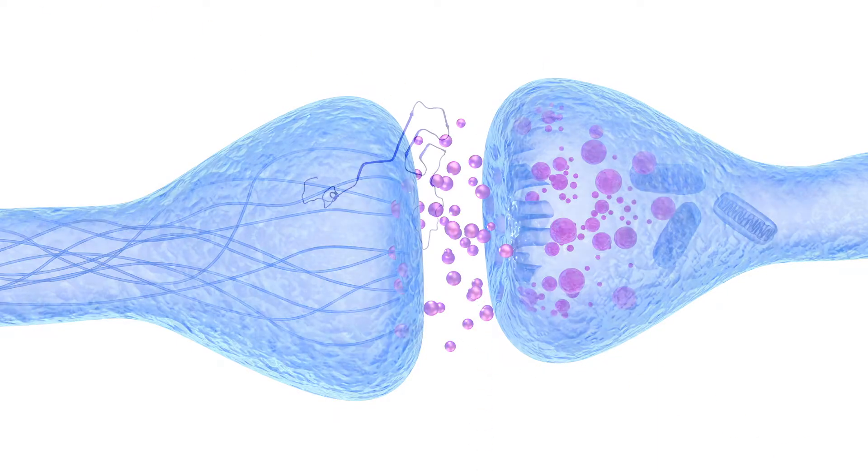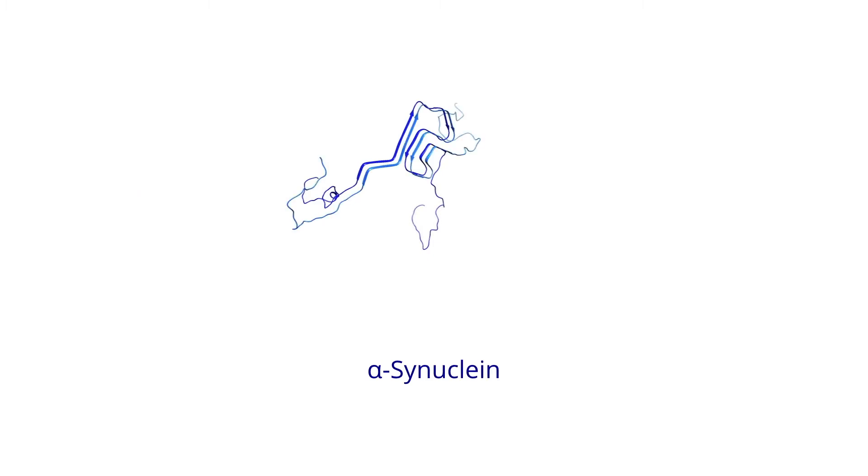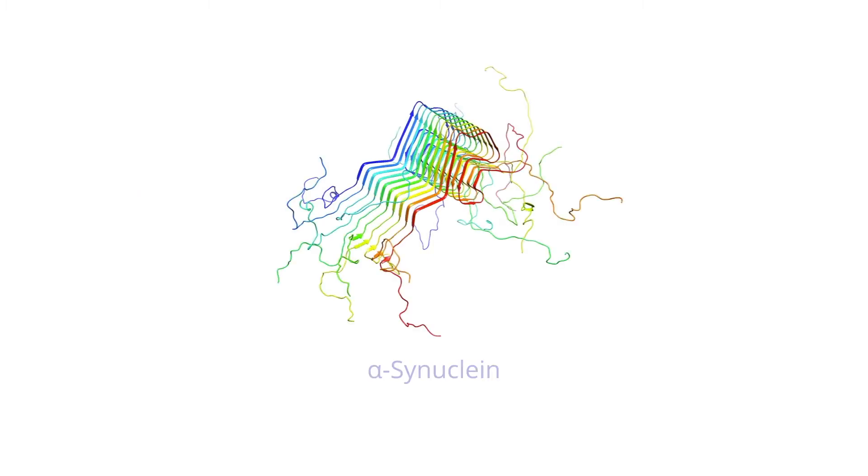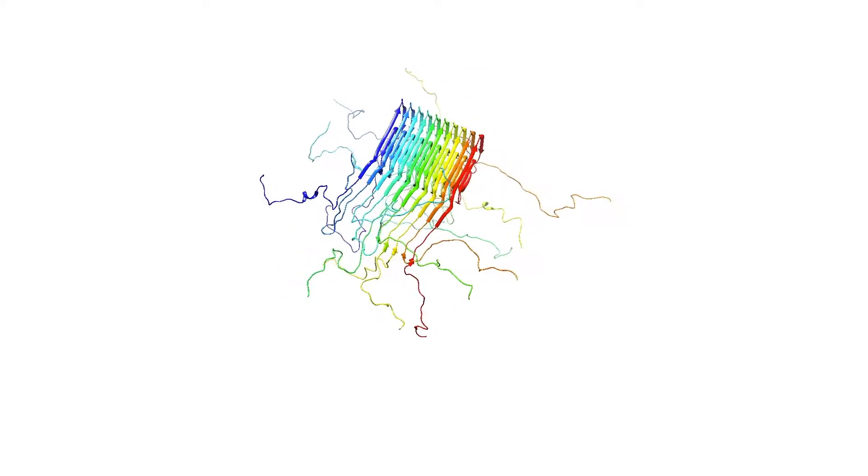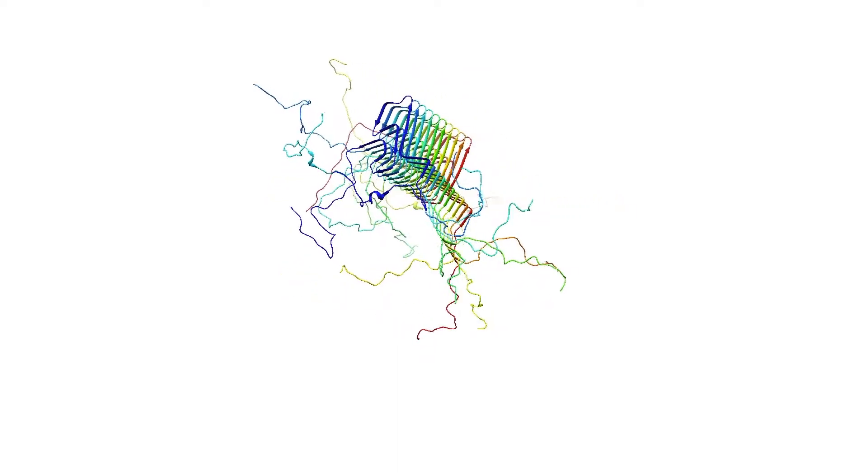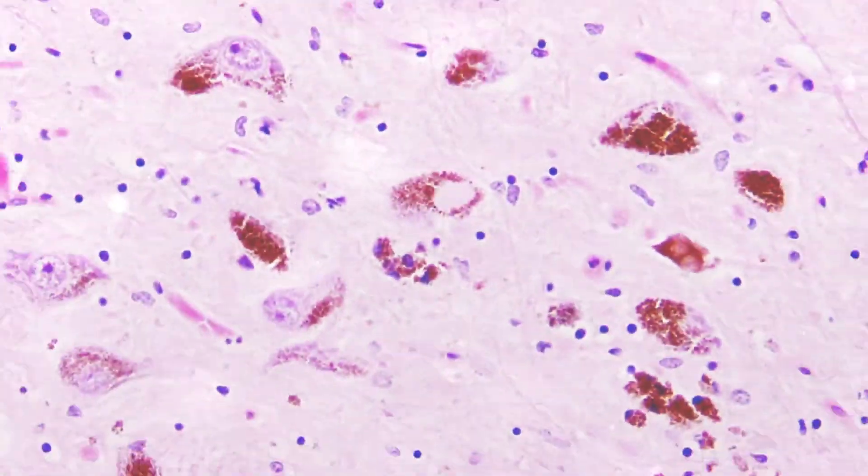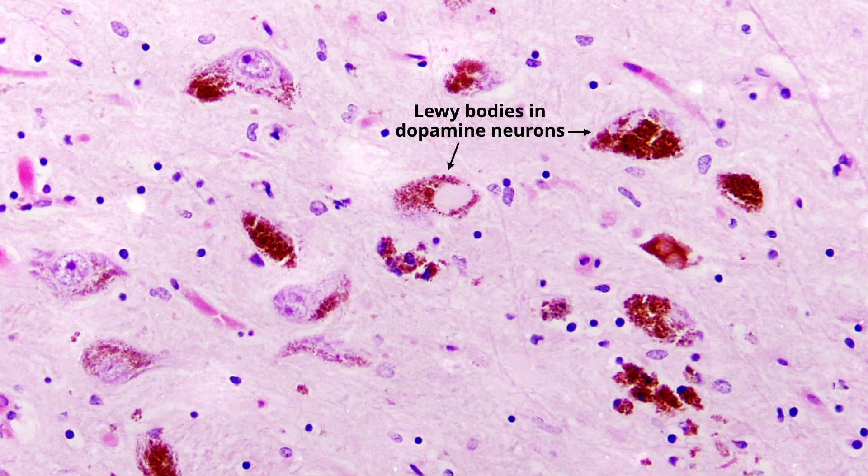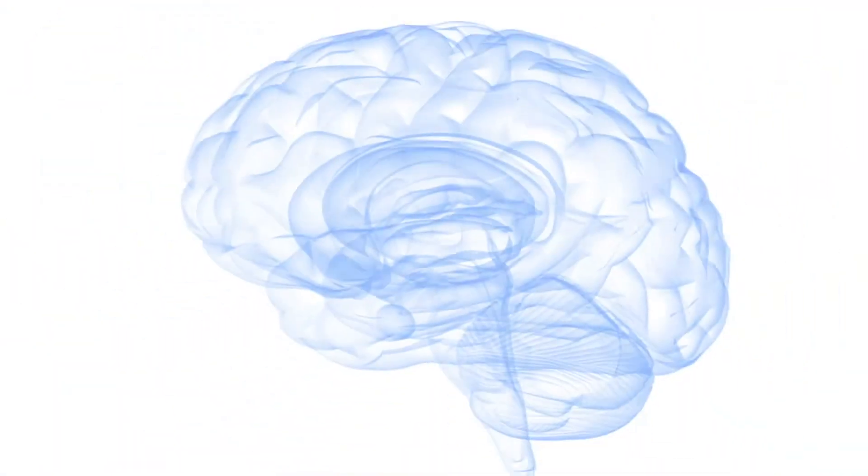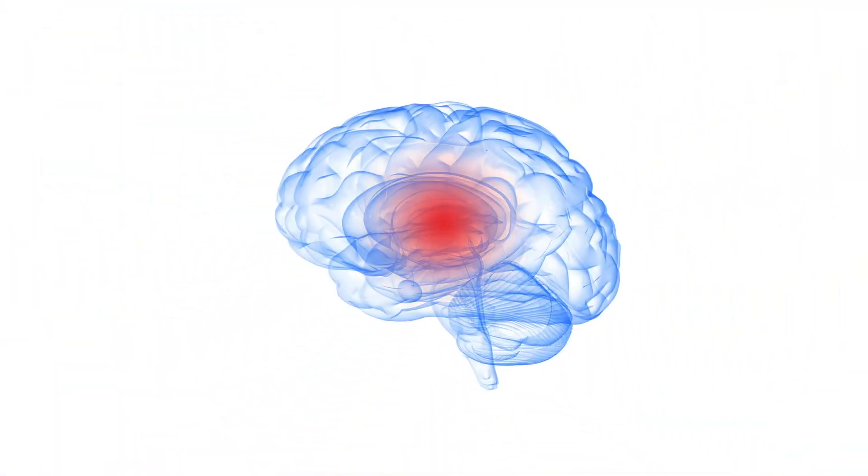In addition, CDNF helps to reduce the impact of toxic proteins in the brain. One such protein is alpha-synuclein, a protein that aggregates and forms Lewy bodies in the brain in Parkinson's. CDNF also alleviates neuroinflammation, which is inflammation of the brain tissue associated with Parkinson's. Reducing this inflammation helps prevent the dopamine-producing neurons from slowly degenerating and eventually dying.